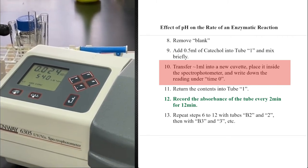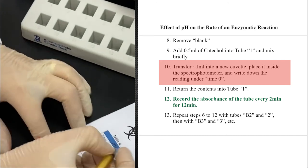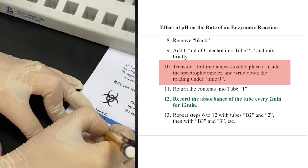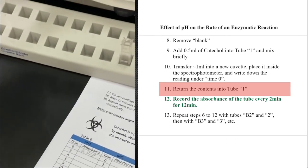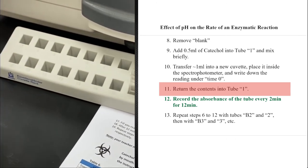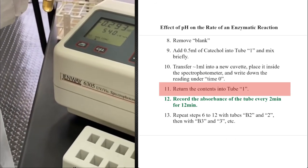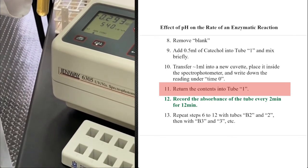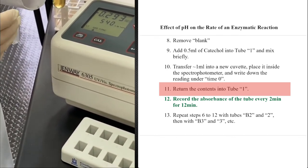We should have our table of results. 0.017 was our first reading at time zero. Then we will start the timer. We will wait two minutes. During those two minutes, the color is becoming darker.